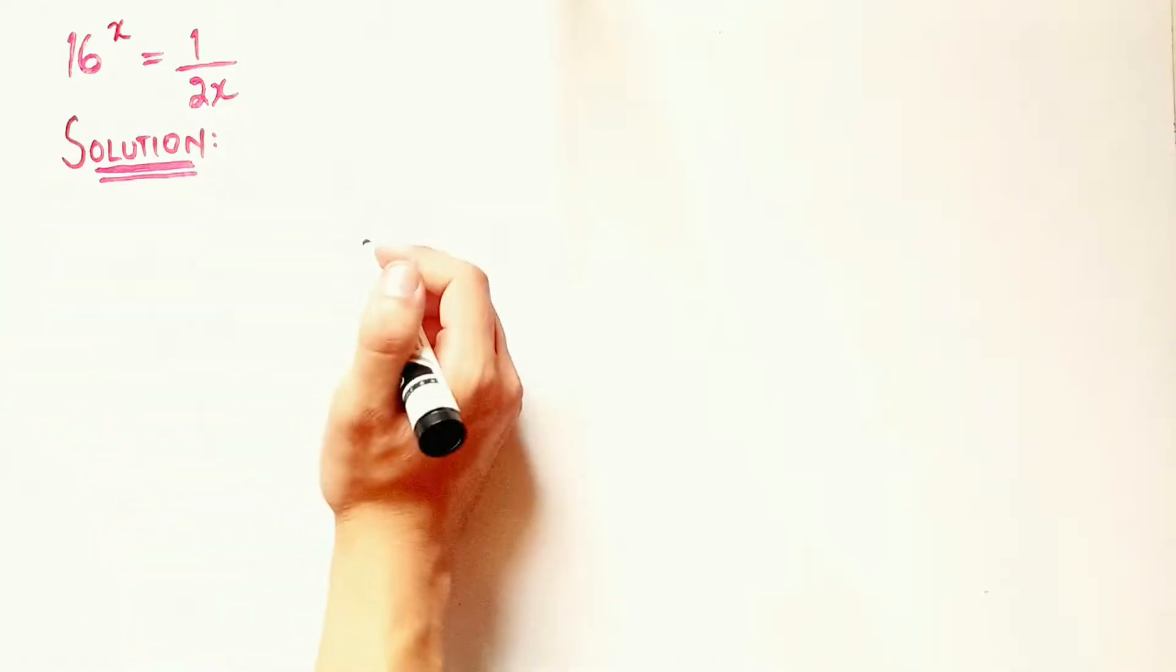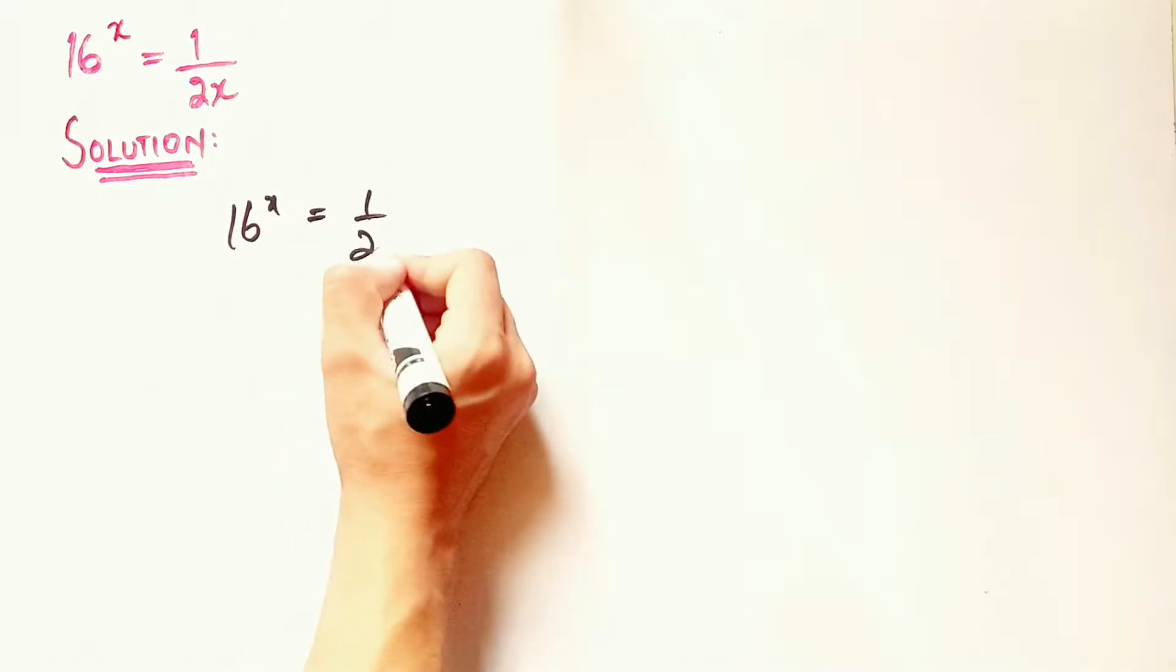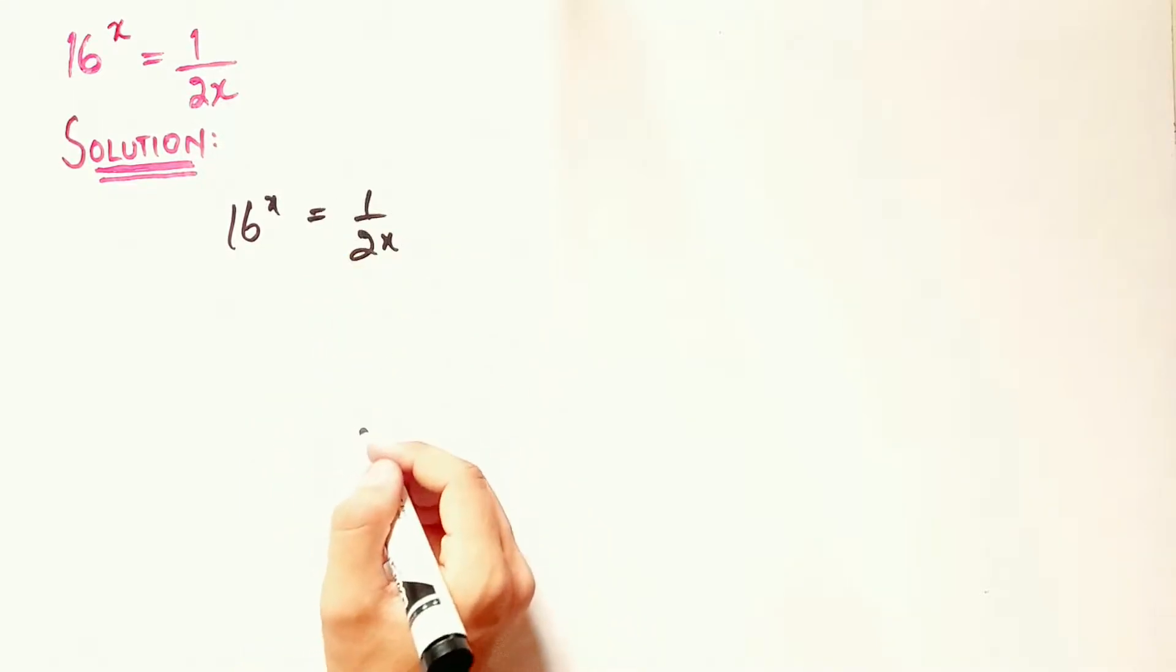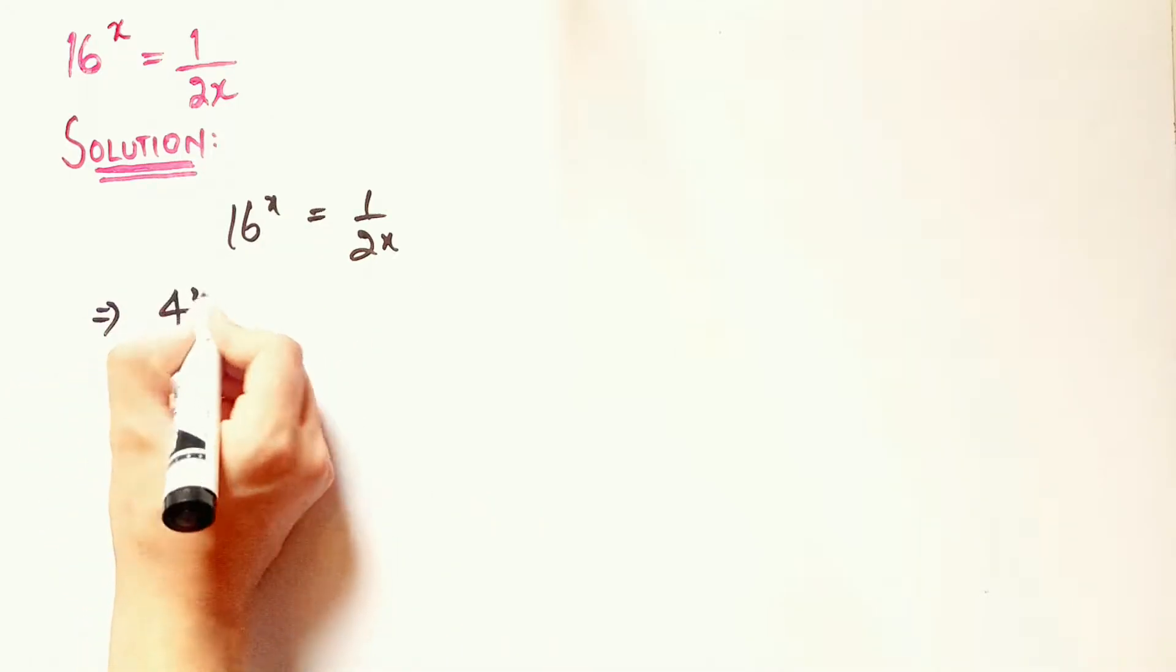Let us solve this algebraic equation: 16 to the power x equals 1 over 2x. The first thing I'm going to do is write 16 as 4 squared.